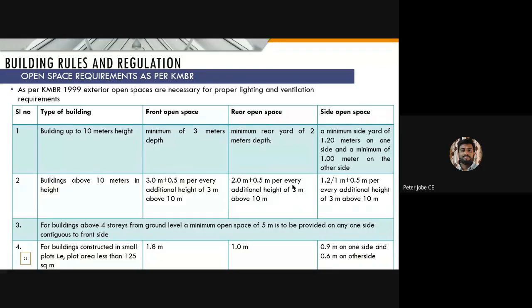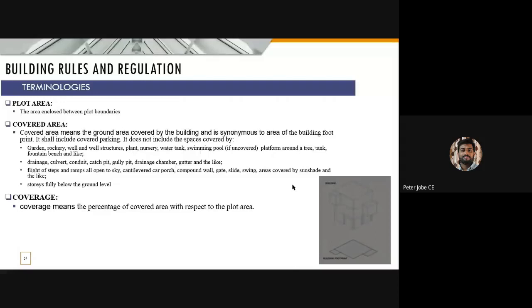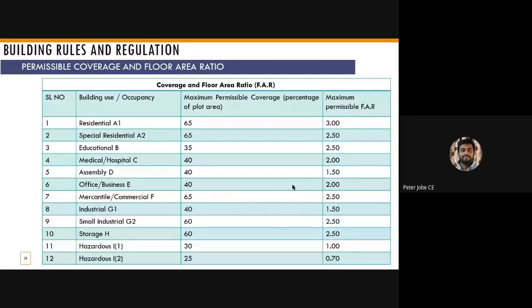There are tables regarding what the setback distance should be on each side. It won't be asked as a problem, but questions like 'what should be the setback distance for a building of 60 meter height' can be expected. It's always better to properly go through this table. It's not difficult — it's just a basic thing. Then we discussed about permissible coverage and floor area ratio, and the maximum permissible FAR for different categories of buildings.